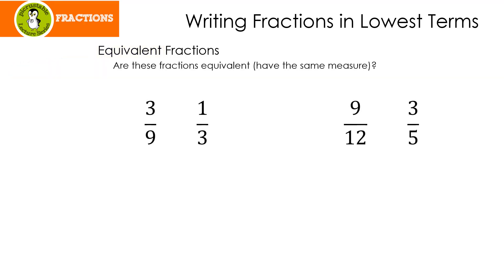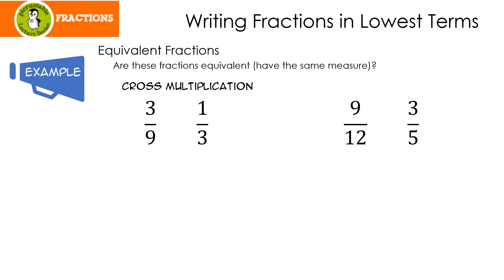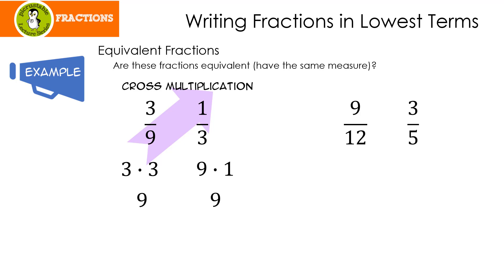We could make little diagrams for all of these, but let me show you how easy it is to determine if these are equivalent fractions. What we're going to do is cross multiply. 3 times 3 is 9, and 9 times 1 is 9. Since 9 equals 9, that means that 3 ninths equals 1 third — and we just saw that looking at our circles.